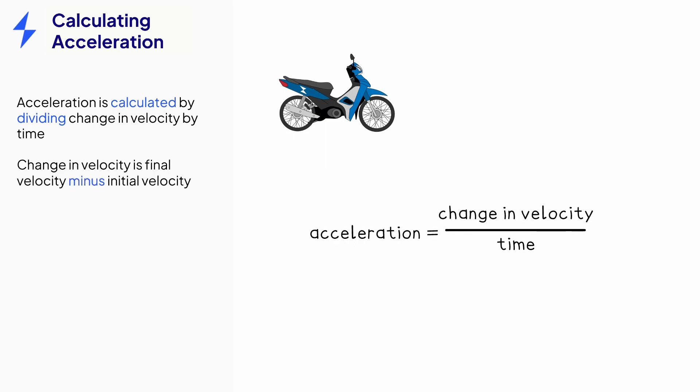The change in velocity is defined as final minus initial velocity. It's important to get this the right way around. Initial velocity has the symbol u and final velocity has the symbol v. So we can write this equation as a equals v minus u over t.